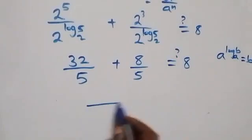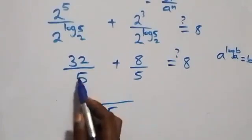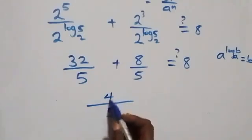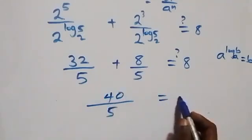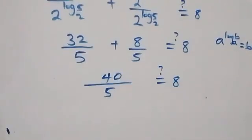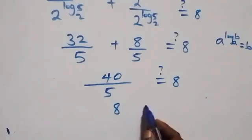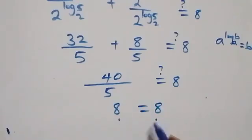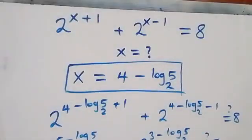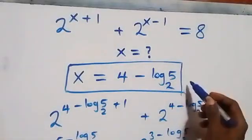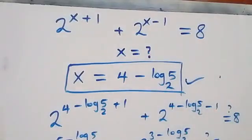So we have 32 over five plus eight over five, which gives 40 over five, that's eight, which equals eight. Left-hand side equals right-hand side, and hence we can conclude that x equals four minus log₂5 satisfies this given problem. Thank you for watching — don't forget to subscribe for more videos and turn the notification bell on. See you next class, bye for now.